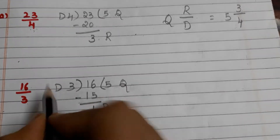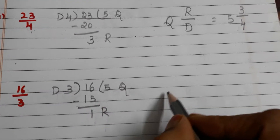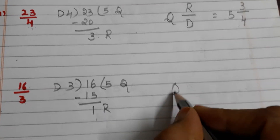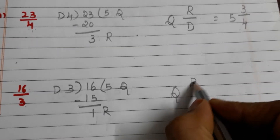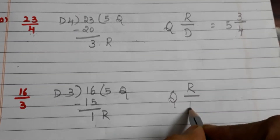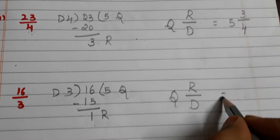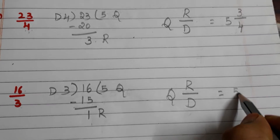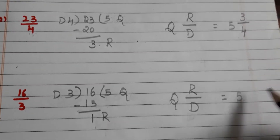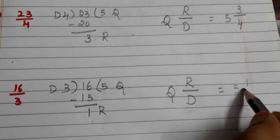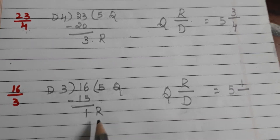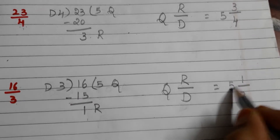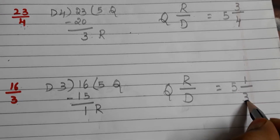Now we have to write the mixed fraction: Q R/D. What is the quotient? 5. What is the remainder? 1. What is the divisor? 3. So 5 and 1/3 is the mixed fraction.